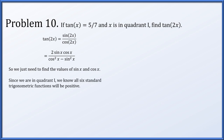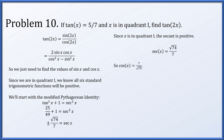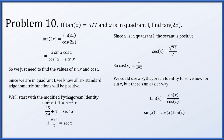Since we're in quadrant 1, sine, cosine, tangent, secant, cosecant, and cotangent will all be positive. Using the modified Pythagorean identity, tangent squared x plus 1 equals secant squared x, and since tangent is 5 over 7, squaring that gives 25 over 49. This allows us to solve that the secant of x is positive root 74 over 7, so cosine is 7 over root 74. Since tangent equals sine over cosine, sine equals cosine times tangent: 7 over root 74 times 5 over 7 — the 7s cancel — giving sine of x equal to 5 over root 74.